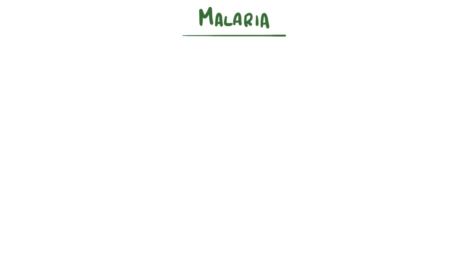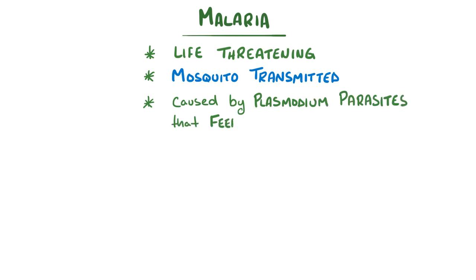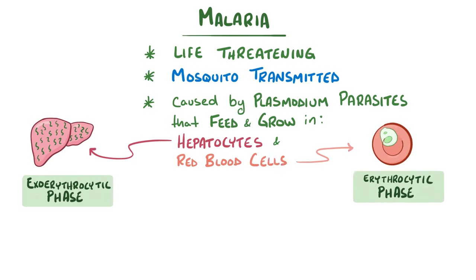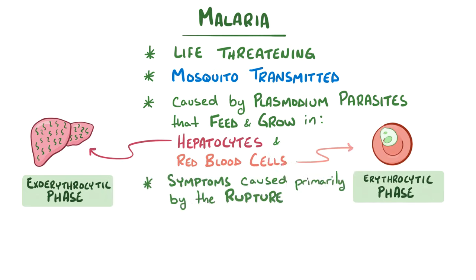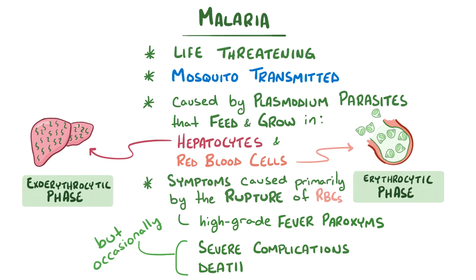As a quick recap, malaria is a life-threatening mosquito-transmitted infection caused by plasmodium parasites in which the plasmodium feeds and grows inside hepatocytes and red blood cells. Symptoms are primarily caused by the rupture of red blood cells that usually result in high-grade fever paroxysms, which improve over time but can occasionally cause severe complications and death.